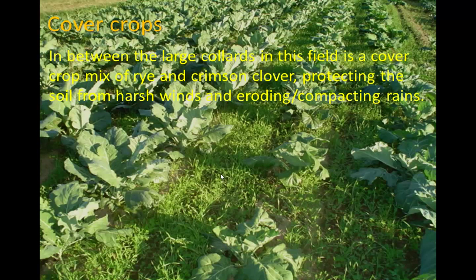Cover crops can be grown alongside crops or during the off season. Here you see large collards with a cover crop mix of rye and crimson clover growing in between the rows. Rye is a type of grass, and these cover crops are protecting the soil from harsh winds and eroding, compacting rains.